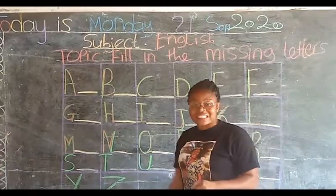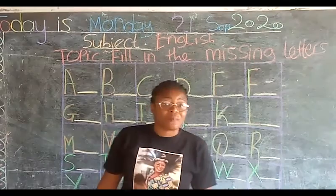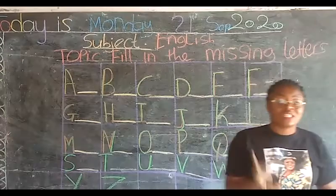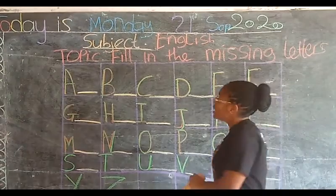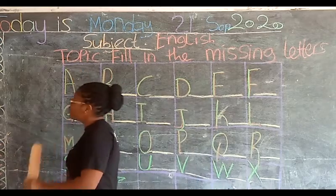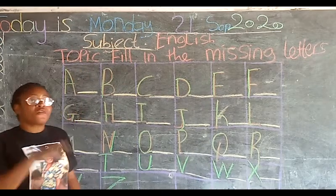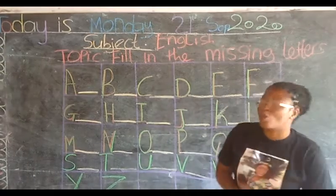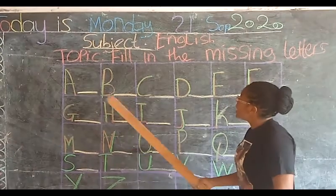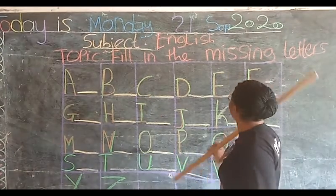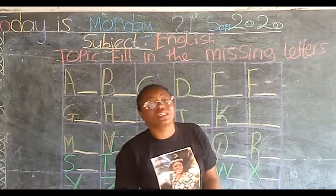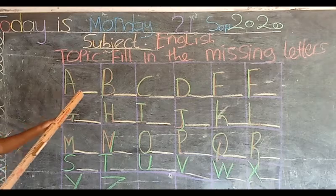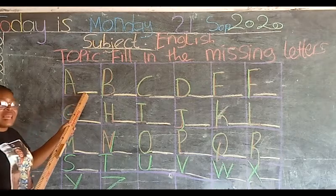There are 26 letters of the alphabet and 5 of the letters are vowels and 21 are consonants. So we'll be doing the filling in the missing letters and we'll be writing the lowercase of the capital letters.